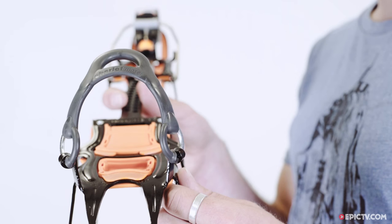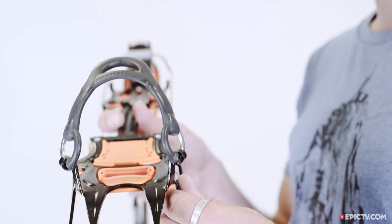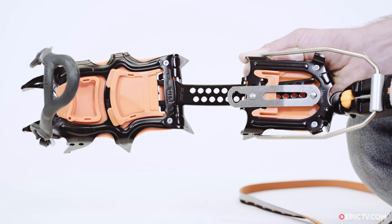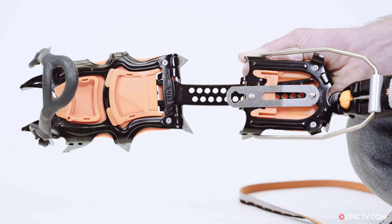The Sarkin is an all-round crampon that loves to be challenged with steep mixed terrain and ice climbing, but it's just as happy with easier climbs and glacier travel.